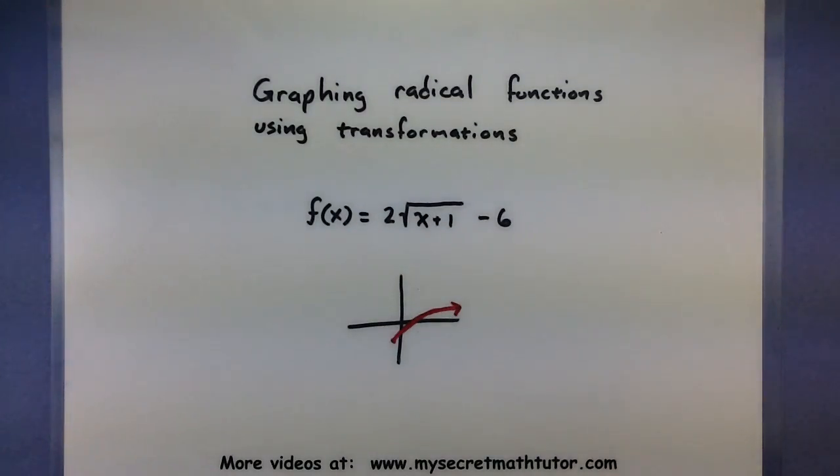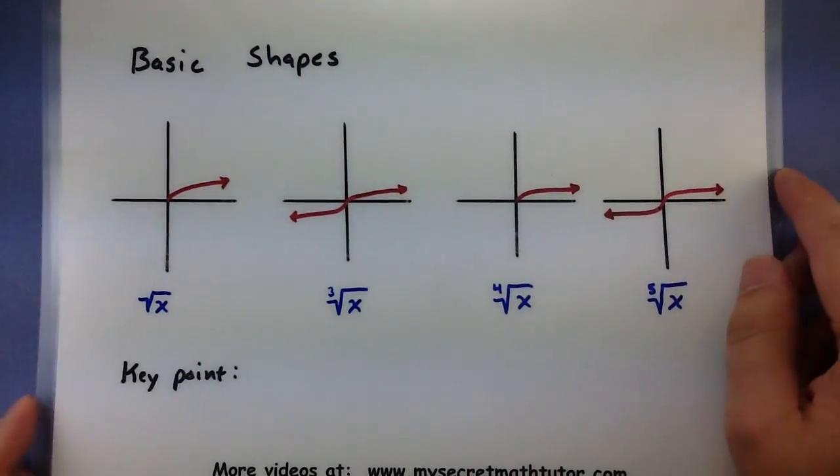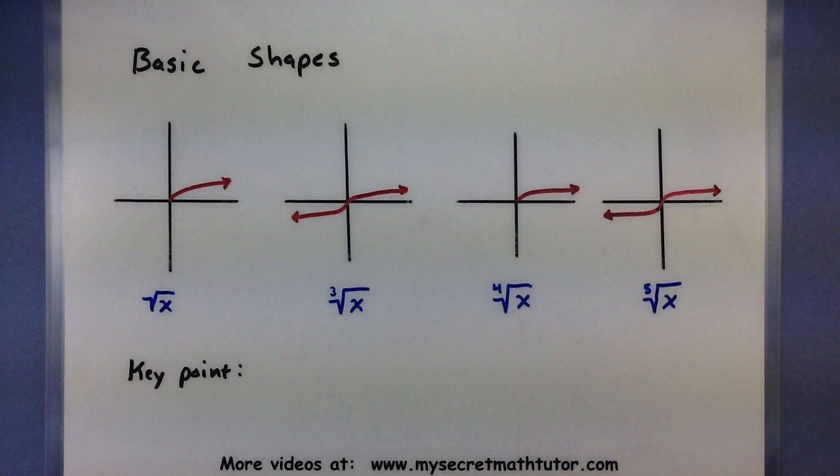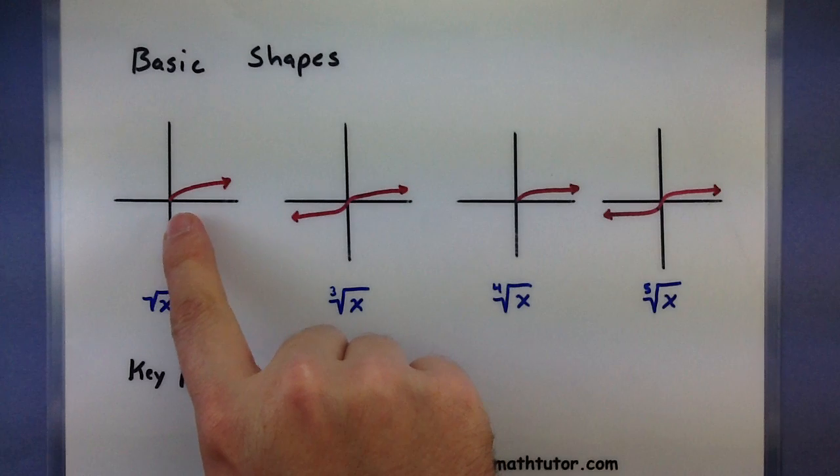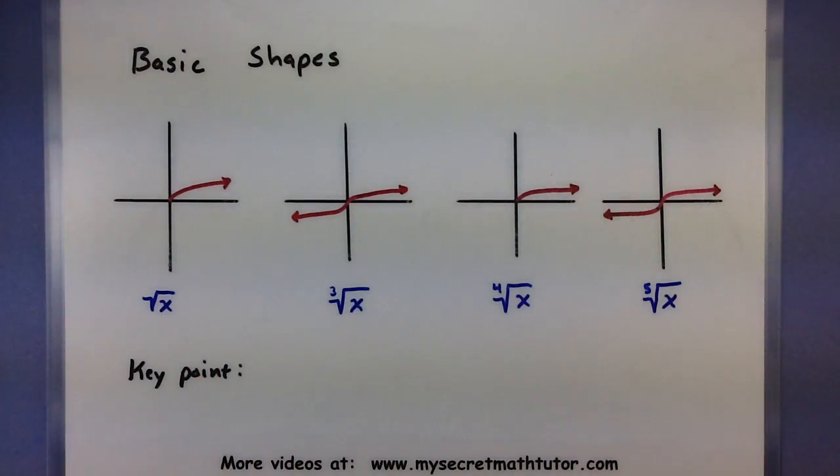In order to get this process down let's look at some of the basic shapes for radicals. The way I like to think of a lot of radicals is they kind of look like the upper half of an airplane wing. Probably one of the most familiar is something like the square root of x. So it starts at (0,0) and then starts to increase very slowly out from there.